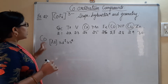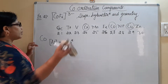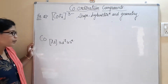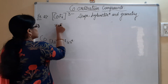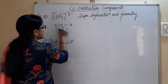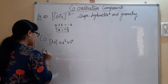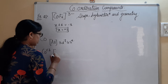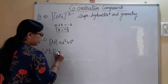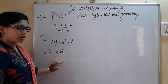Now we need to find the oxidation state of cobalt in CoF6³⁻. Cobalt is x, fluorine contributes a total of minus 6, and the overall charge is minus 3, so x equals plus 3. Cobalt is in the plus 3 oxidation state. If it is in the plus 3 oxidation state, we need to remove 3 electrons from the configuration, so cobalt becomes 3d⁶.